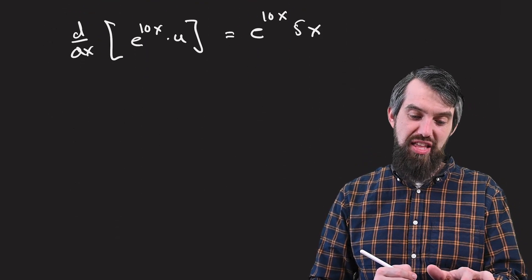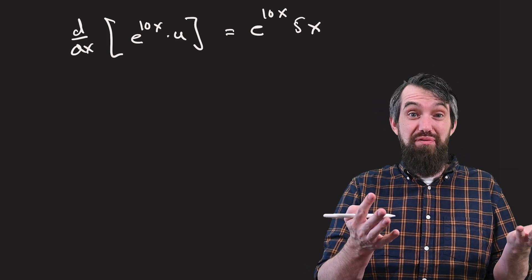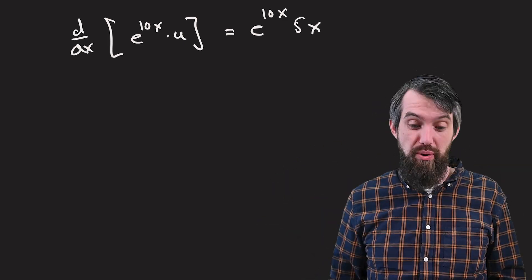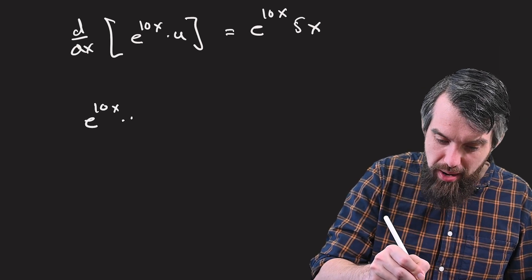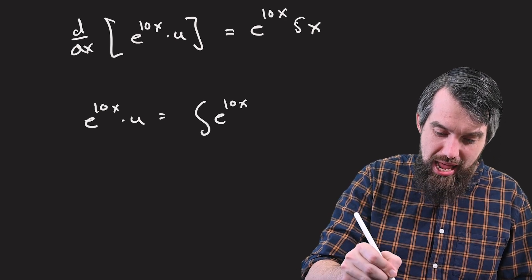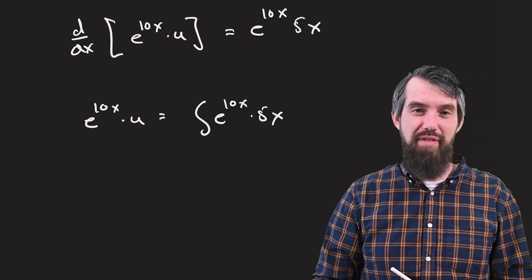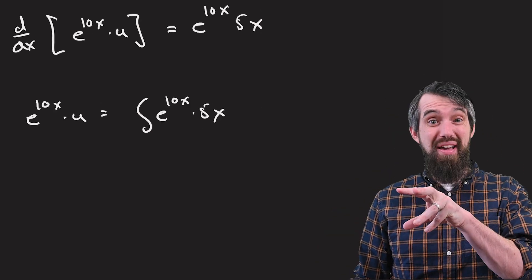Okay, so that's the thing that we now want to do. But I can solve that differential equation. Just a derivative is equal to something. So integrate both sides. On the left, you get e to the 10x multiplied by u. And on the right-hand side, you have the integral of e to the 10x multiplied out by 5x. Now we can do this integral. It looks like e to the 10x times 5x. That's going to be an integration by parts.